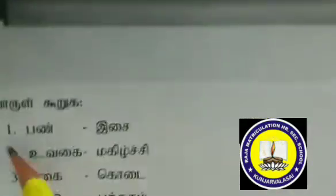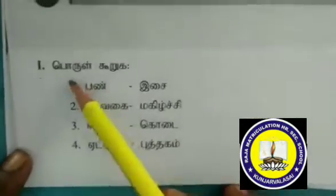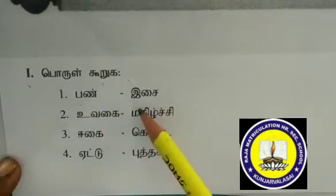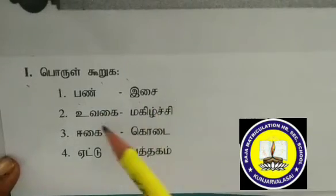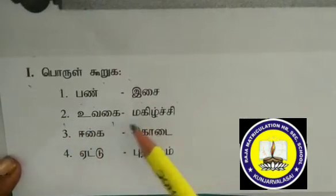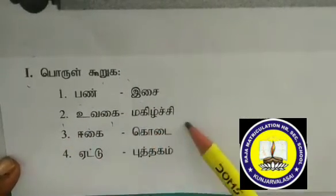Aadipadimahilvom. First one: Porlkurha — Isai. Second one: Uvahai — Magilchi.